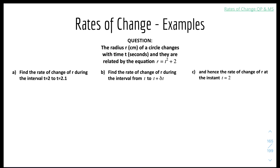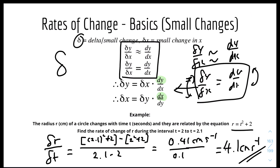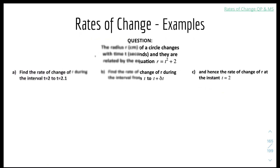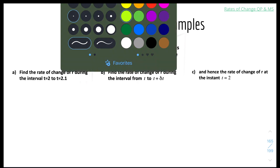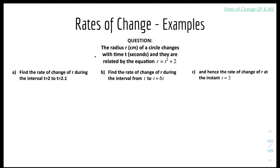Now we'll look at some examples. From the previous question — R equals T squared plus 2 — we found that the rate of change was 4.1 cm per second. So for part A, the answer is 4.1 cm per second.